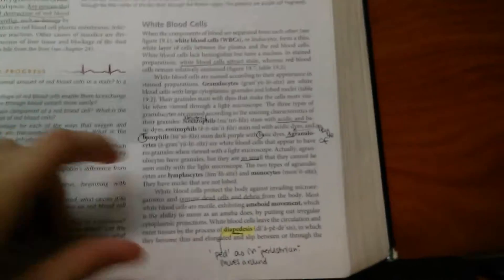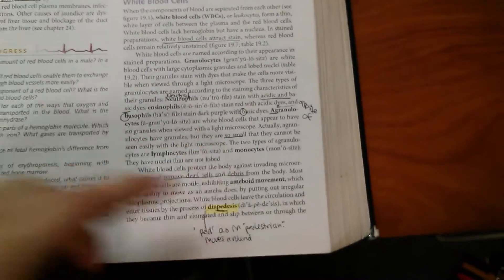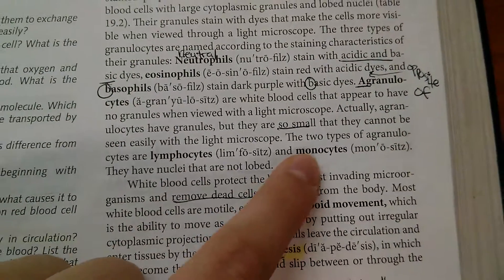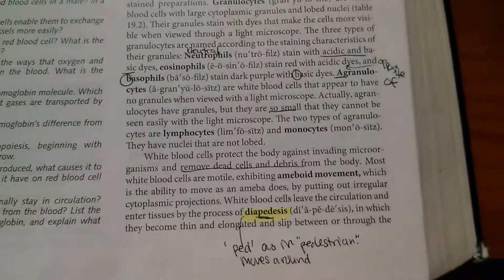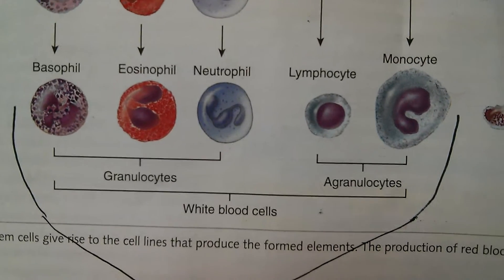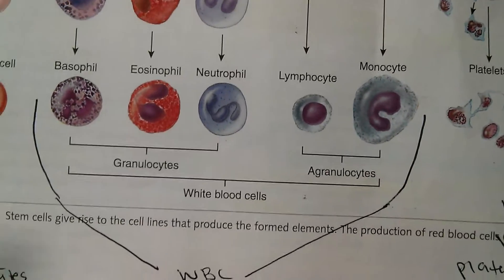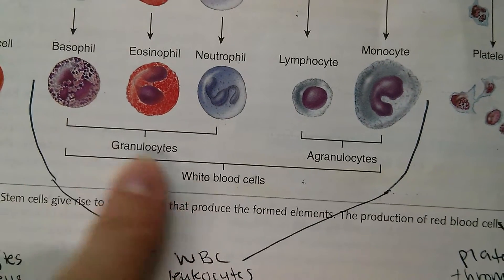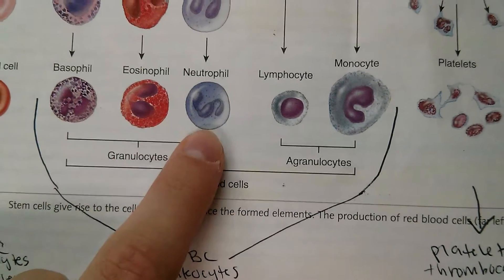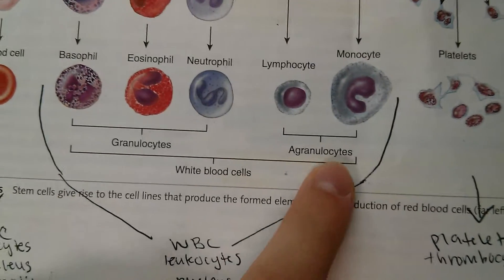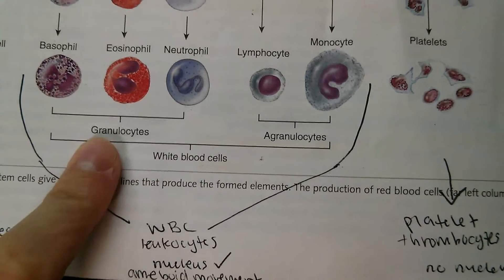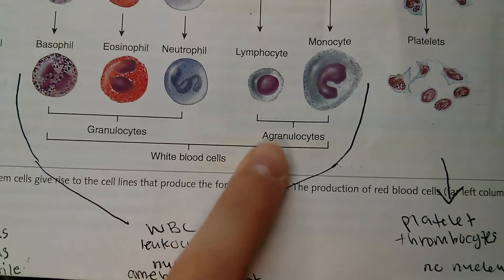With white blood cells, we have five different types: neutrophils, eosinophils, basophils, monocytes, and lymphocytes. The first category are called the granulocytes — the ones that end in 'phil': basophil, eosinophil, and neutrophil. These are the agranulocytes. When you put an A in front of something, it means the opposite of. So granulocytes have granules, and agranulocytes do not.